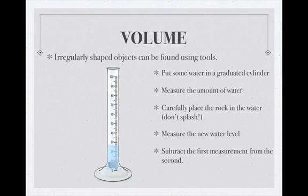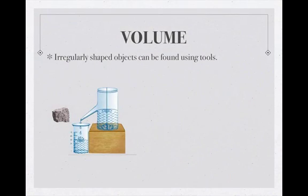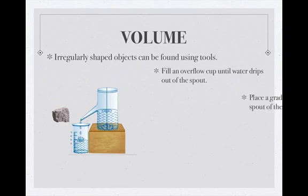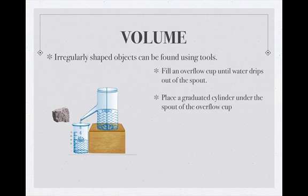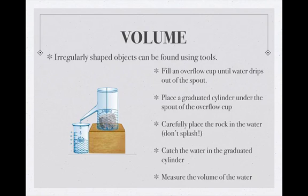And there are other ways to do this as well. Imagine we've got a rock that's too big to fit in a graduated cylinder. Well, they have these things called overflow cups. And the way this works is you fill up the overflow cup with water until a little bit of water starts to drip out of the spout. And then you place a graduated cylinder underneath the spout. And when you carefully place the rock in, the water level rises and that water pours into the graduated cylinder. Now all you need to do is measure the amount of water in the graduated cylinder. And the volume of that water is the water that was displaced by the rock. So that's the volume of your rock.